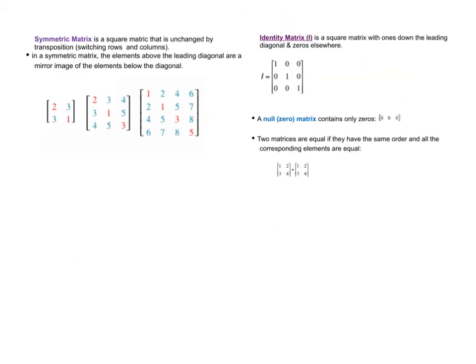A symmetric matrix is a square matrix where the leading diagonal acts like a mirror. You can see that the numbers on opposite sides of the diagonal are the same — for example, three and three, four and four, five and five. It's like a mirror image across the diagonal. In the exam, you might need to identify a matrix as symmetric because the numbers are the same on both sides.